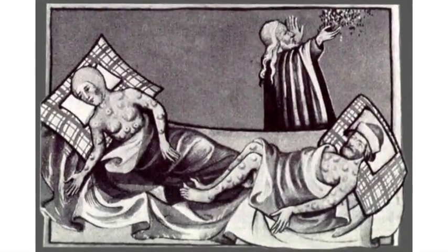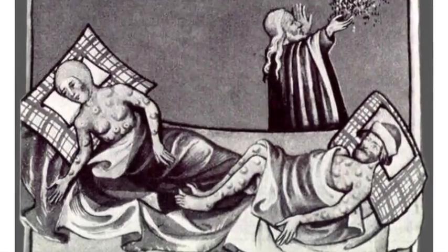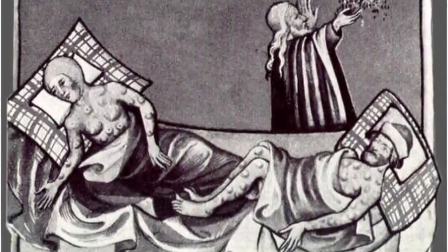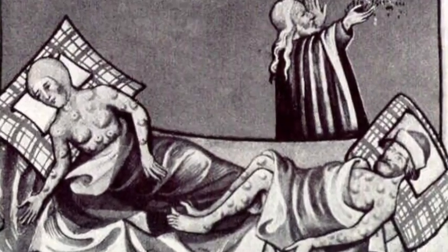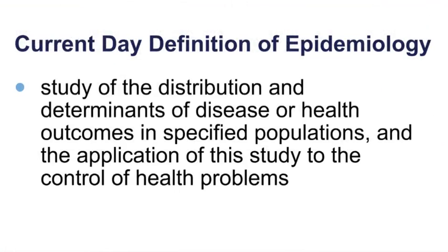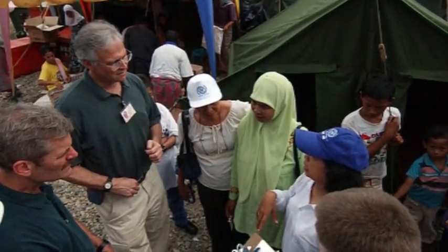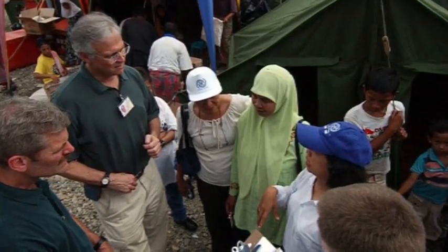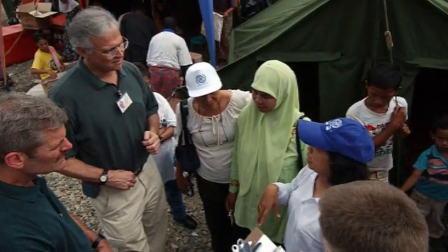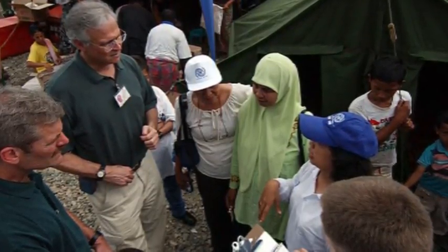There are many definitions of epidemiology. It is thought that in the mid-19th century the word epidemiology was first used to describe the scientific study of epidemics. For this course, we will use the following definition: epidemiology is the study of the distribution and determinants of disease or health outcomes in specified populations and the application of this study to the control of health problems. The meaning of epidemiology has expanded over the years, and present-day epidemiology encompasses the study of all varieties of illness, health outcomes, and injury as they affect populations.